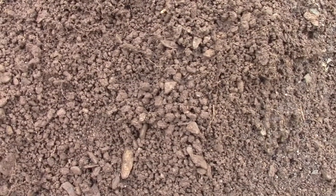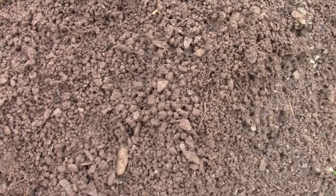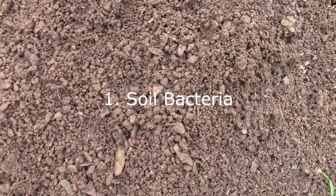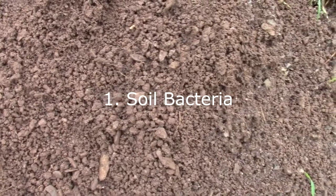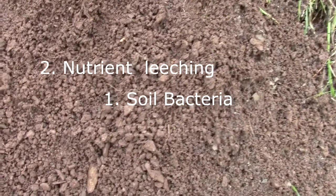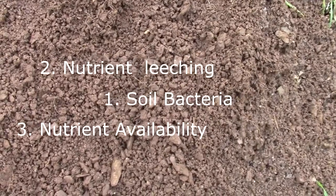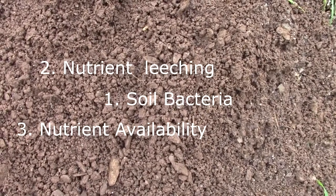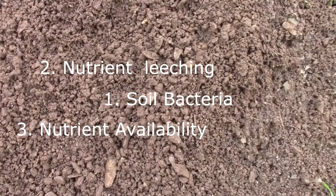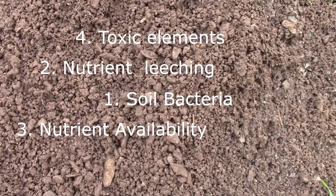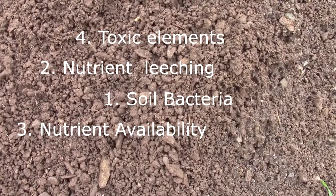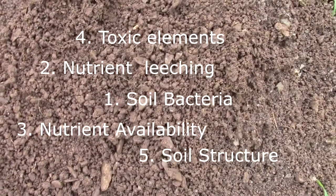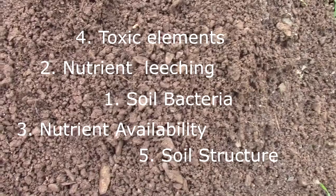Whilst researching this topic I came across an extension from the University of Vermont which gave five reasons why soil pH is important. The first is soil bacteria, which releases nitrogen from organic matter in the pH range of 5.5 to 7. The second and third are nutrient leaching and availability — at a pH below 5 plant nutrients leach out of the soil faster, and nutrients are generally most available between 5.5 and 6.5. The fourth reason is that elements aluminium, iron and manganese can reach toxic levels as the pH decreases. The final reason is soil structure — it is easier to work with soils in the middle pH range rather than high acid or alkaline soils.